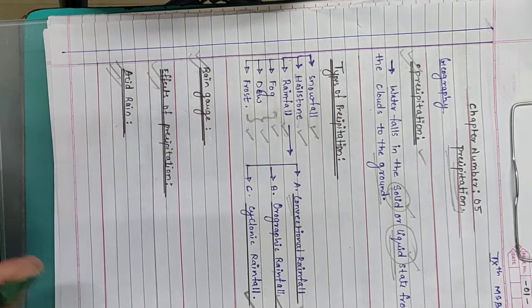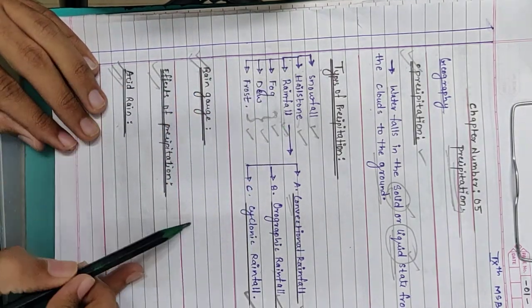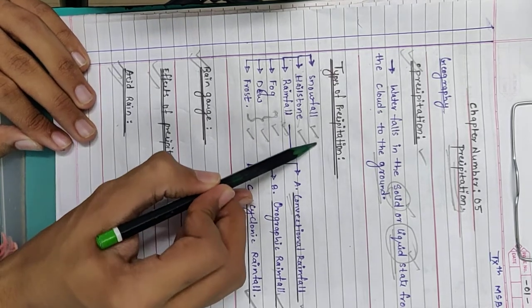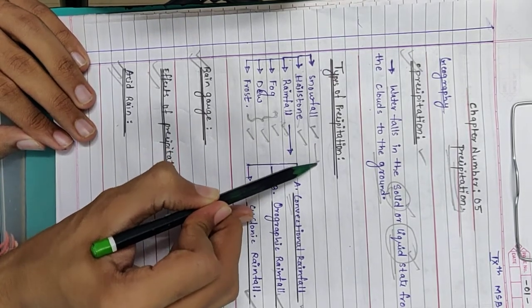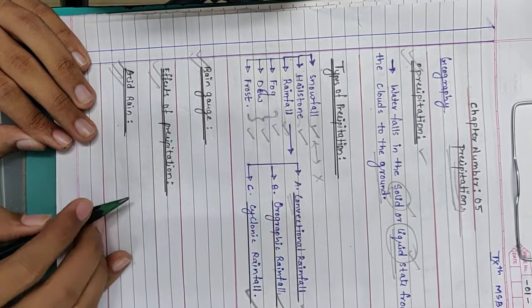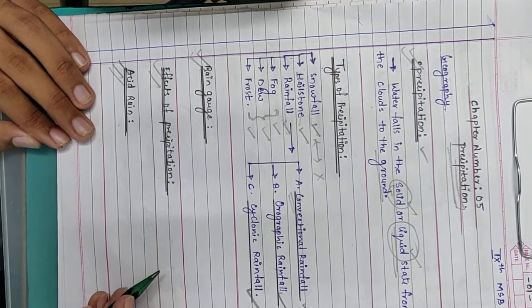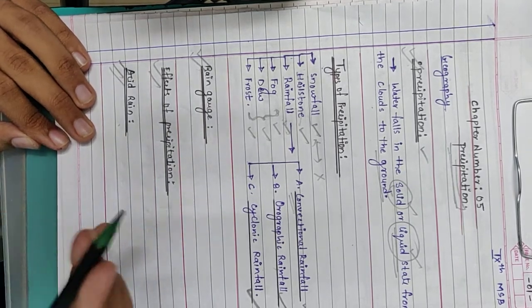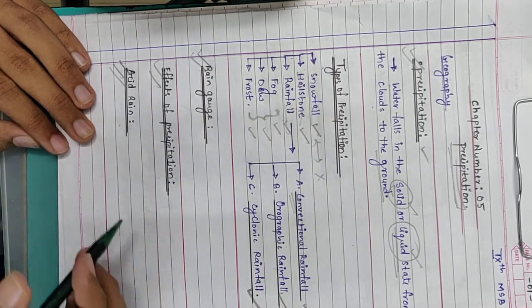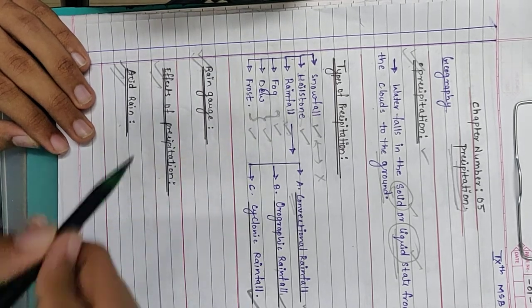When I start my chapter, according to your 9th standard Maharashtra State Board book, the first type of precipitation explained is snowfall. But I will not explain snowfall first. I will follow my own pattern. As you watch all the videos, you will gradually understand why I haven't followed that pattern.